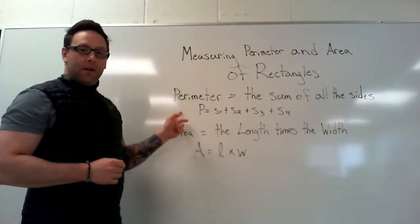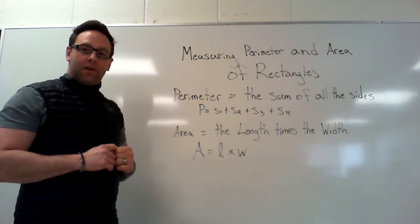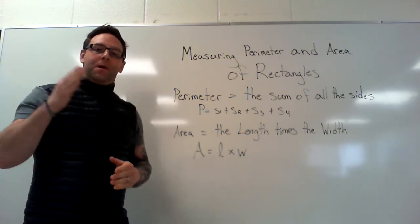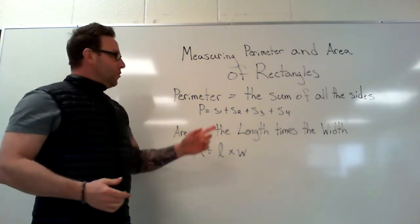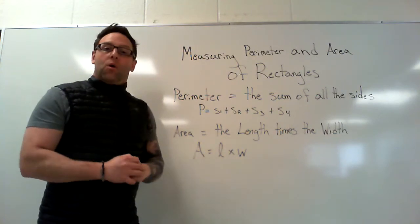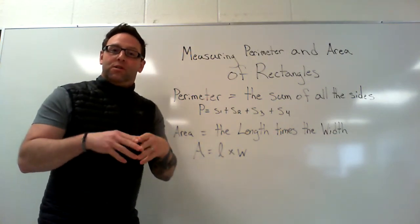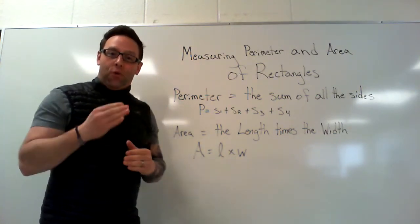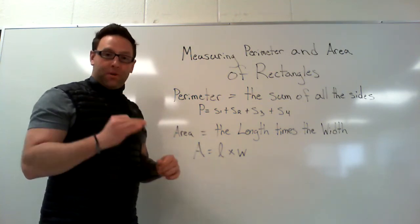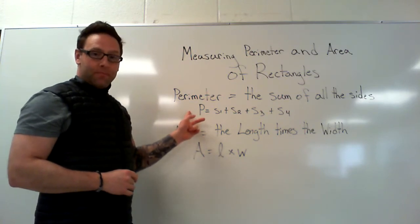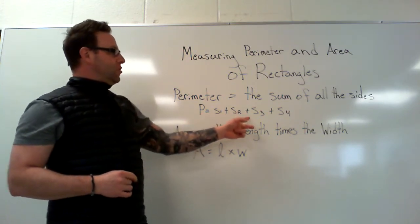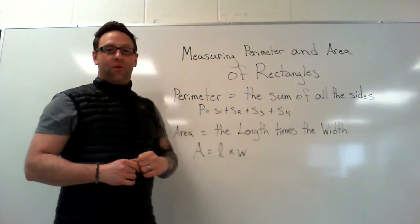The perimeter is the sum of all the sides. What does sum mean? That's when we add up everything and get an answer. This is our first little expedition into formulas. The formula we use for perimeter is: uppercase P equals s1 plus s2 plus s3 plus s4.